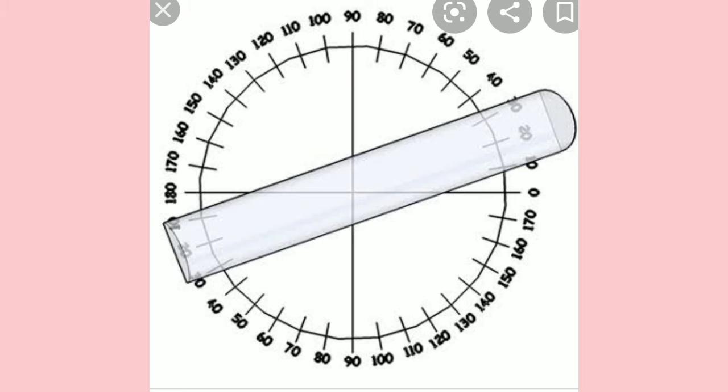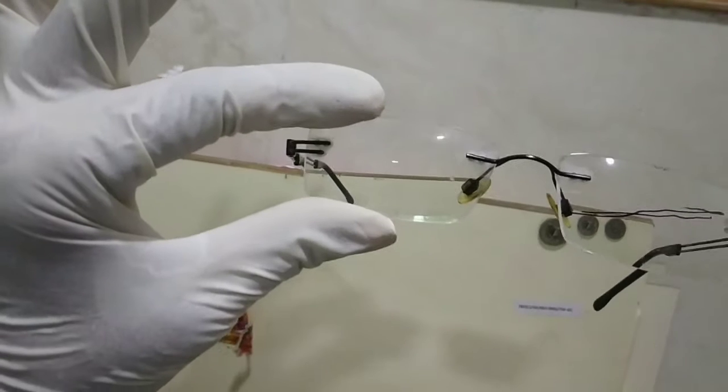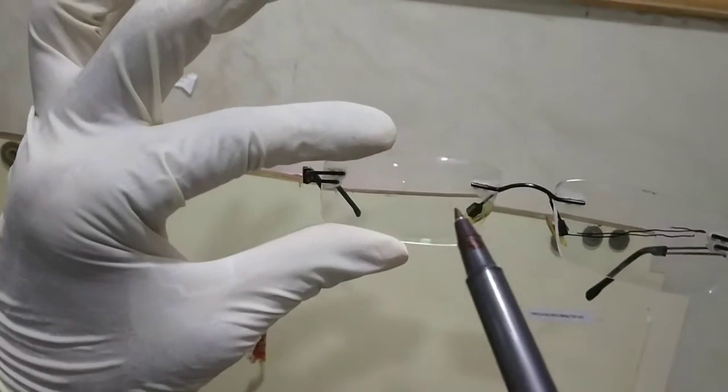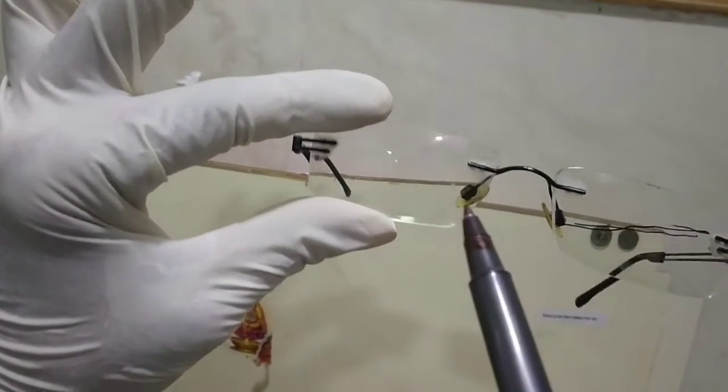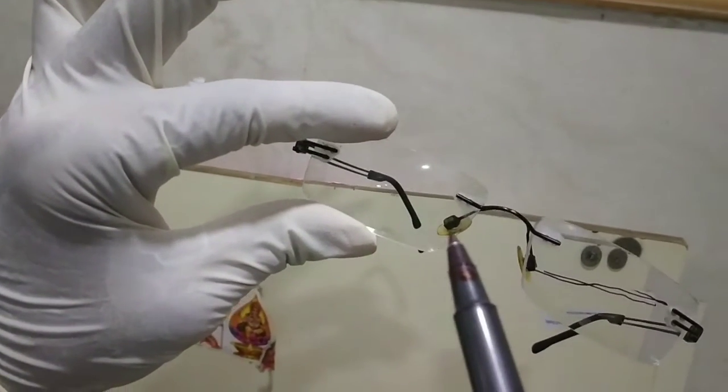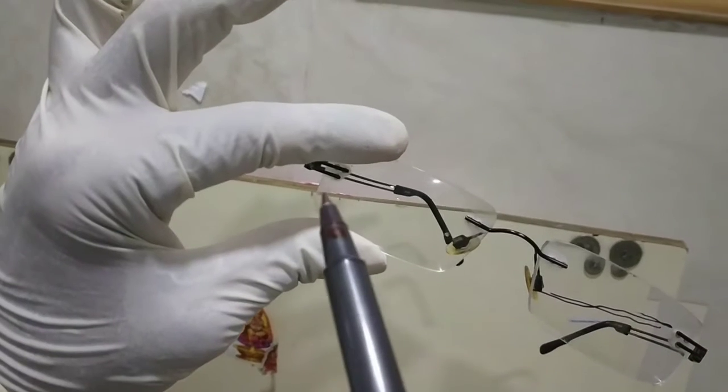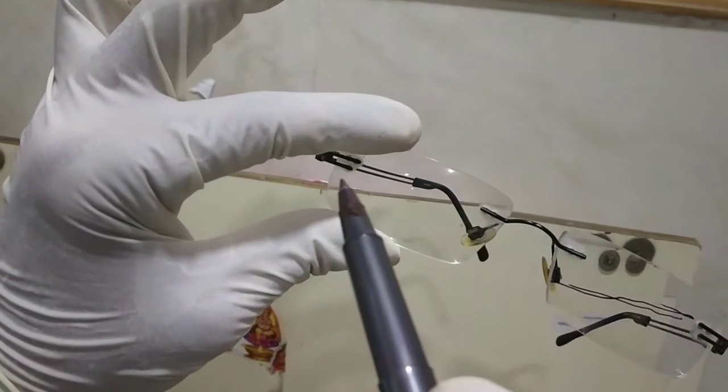Hello friends, today we will learn about manual axis marking. First thing, you have to see the line which is behind the lens. You have to align it straight by keeping the lens like that.